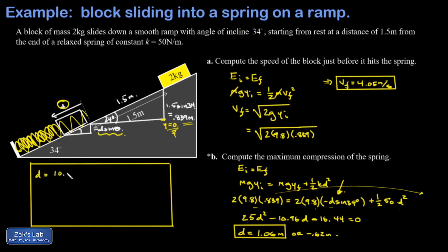So I'd start with negative b, that's 10.96, plus or minus the square root of b squared minus 4 times a times c which has a double negative in it, so be careful with that. All divided by 2 times a which was 25.